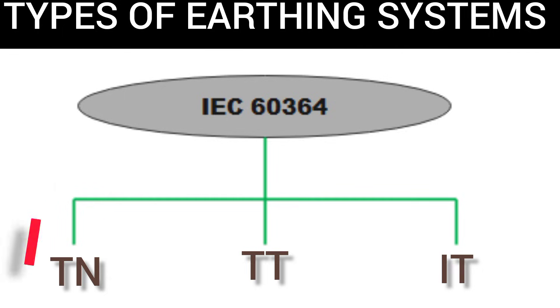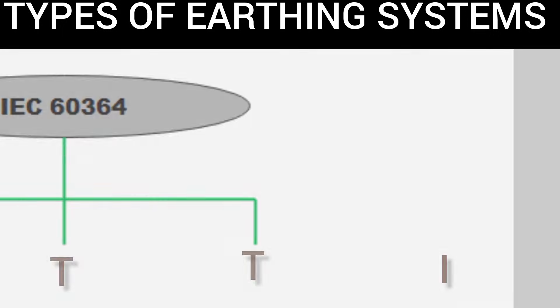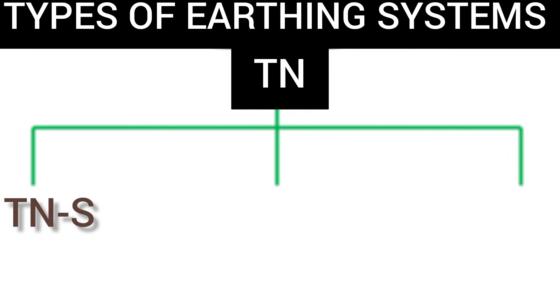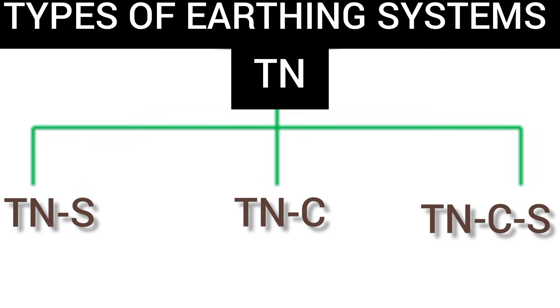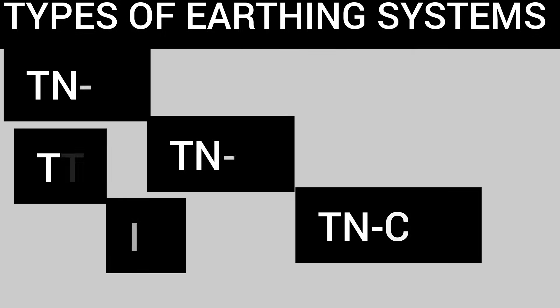The TN here represents TNS, TNC, and TNCS. So practically, we can say there are five types of earthing systems that are used worldwide.